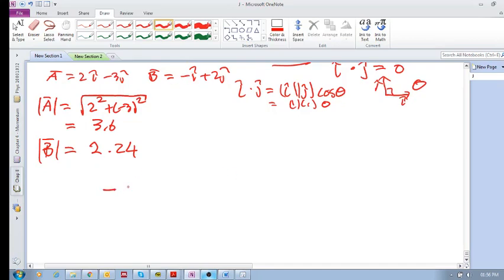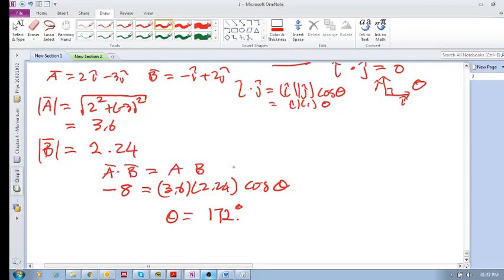So now we've got this. We've got minus 8 on the left. We've got 3.6 times 2.24 cos of theta. That theta will be approximately 172 degrees. So this was A dot B on the left is equal to the magnitude of A and magnitude of B cos of the angle between them. Okay, I hope that helps.